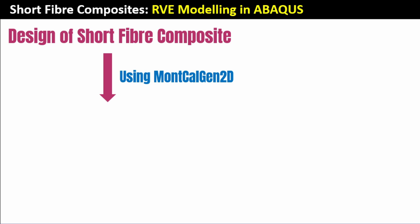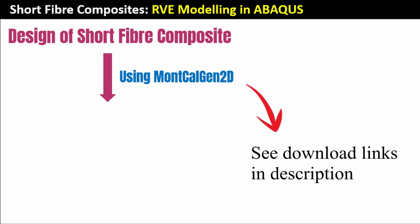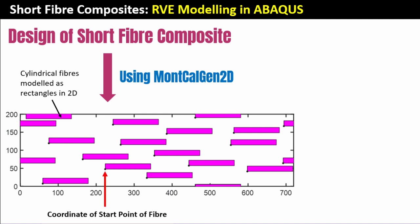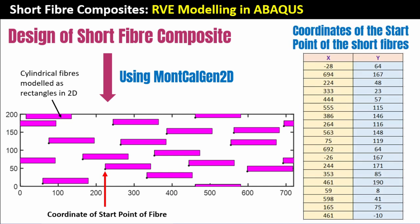At the core of designing short fiber composites is that we need to have randomness. I go back to my Monte Carlo Gen software, which I use to generate a random distribution of inclusions within a rectangular RVE. Please look at the description section to find the link to how you can get hold of this software. We've used Monte Carlo Gen 2D to create this random representation of the inclusions. The pink systems are the rectangular fibers, and what we really need are the start points — the corner points of the fibers — which are randomly distributed.